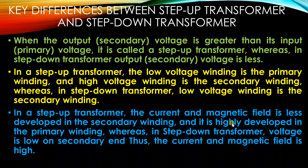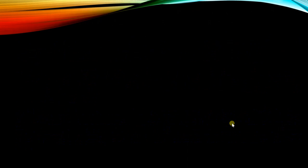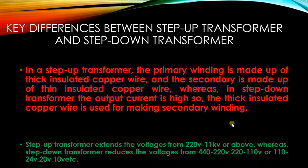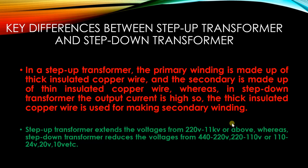In a step-up transformer, the current and magnetic field are less developed in the secondary winding but highly developed in the primary winding. In a step-down transformer, the voltage is low on the secondary and thus the current and magnetic field are high. In a step-up transformer, the primary winding is made of thick insulated copper wire and the secondary is made of thin insulated copper wire.